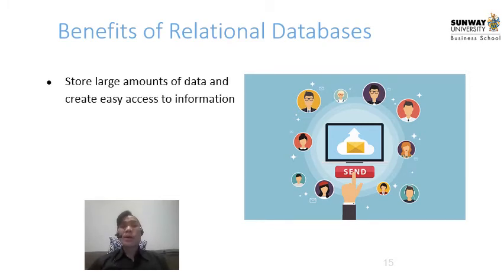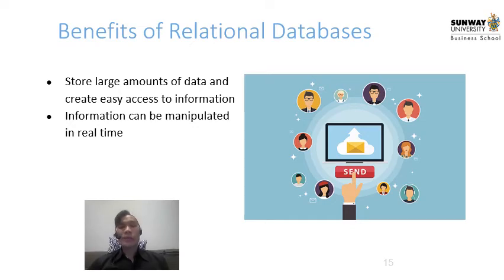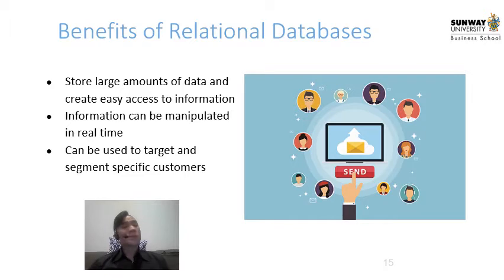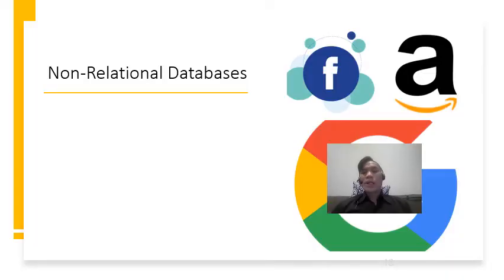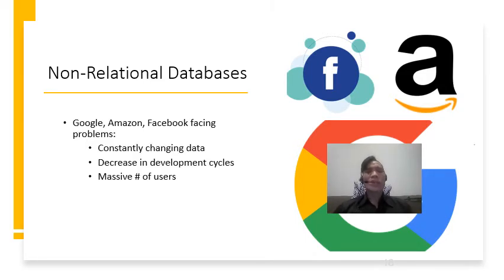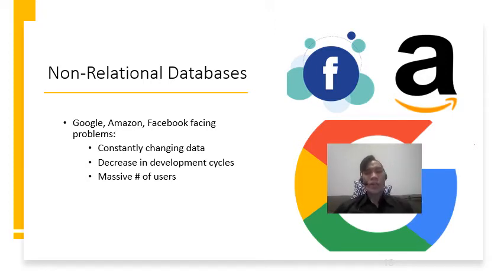The benefits of relational databases include storing large amounts of data, creating easy access to information that can be manipulated at any time in real time. They can be used to target and segment specific customers, especially when all the tables are linked up together — for example, targeting emails for your best customers with the highest value. In contrast, non-relational databases are found widely on the web today, especially on social media platforms like Google, Amazon, and Facebook. These platforms face big problems like constantly changing data, decreasing development cycles, and massive amounts of users, making a relational database structure online very ineffective — hence the introduction of the non-relational database structure.